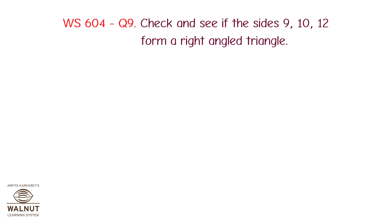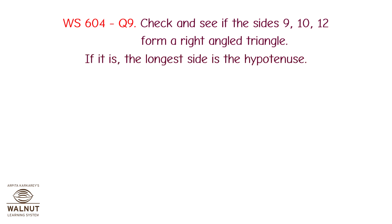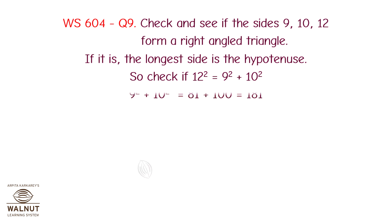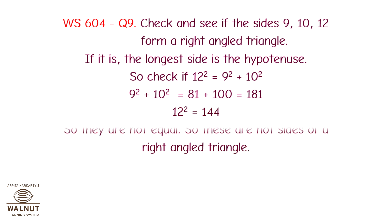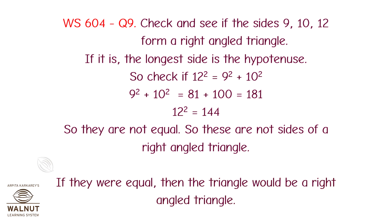Check if the sides 9, 10, and 12 form a right-angled triangle. The longest side is the hypotenuse, so check if 12 squared equals 9 squared plus 10 squared. 9 squared plus 10 squared equals 81 plus 100, which equals 181. 12 squared equals 144. So they are not equal — these are not sides of a right-angled triangle.